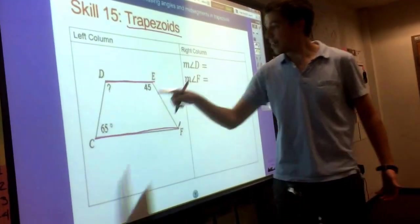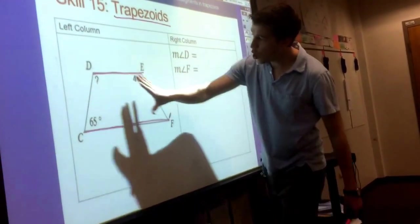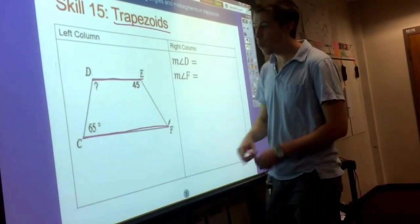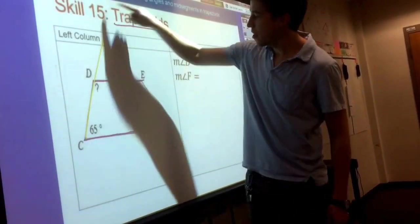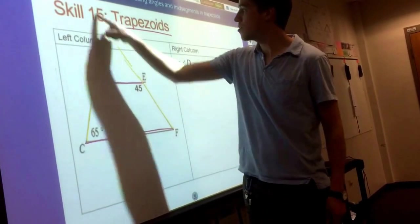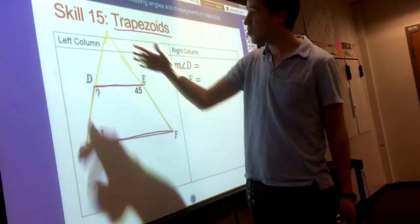D, E, and C, F are parallel. They'll go on forever, never intersect. But we can see right here, D, C, and E, F, if you continue those, they're going to hit each other up here, so they're not parallel.